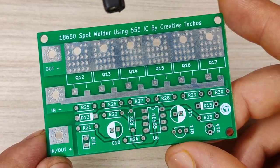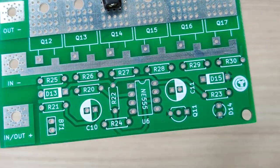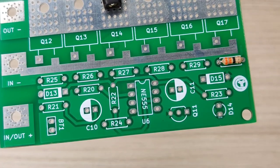And now it is time to assemble the PCB, so let's place all the components on the PCB according to the circuit diagram.